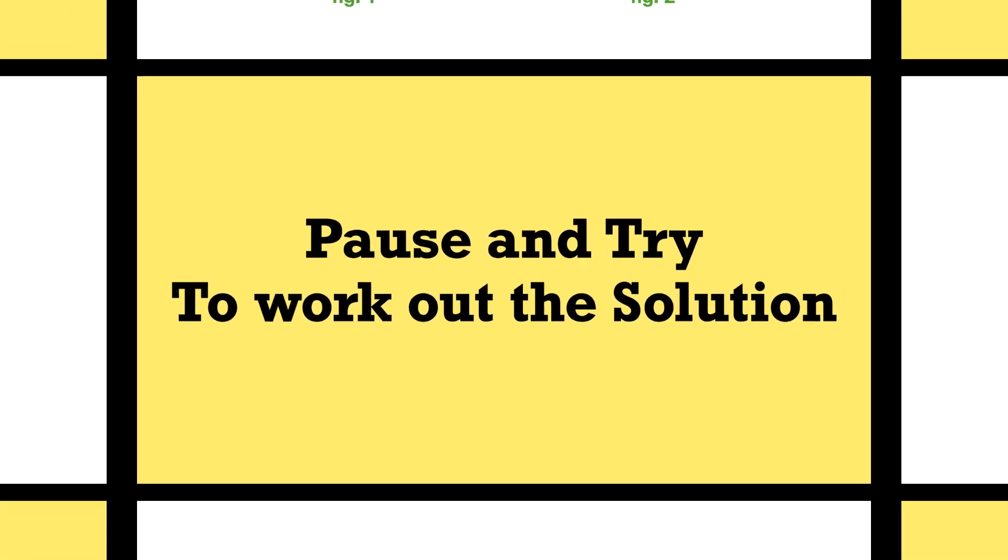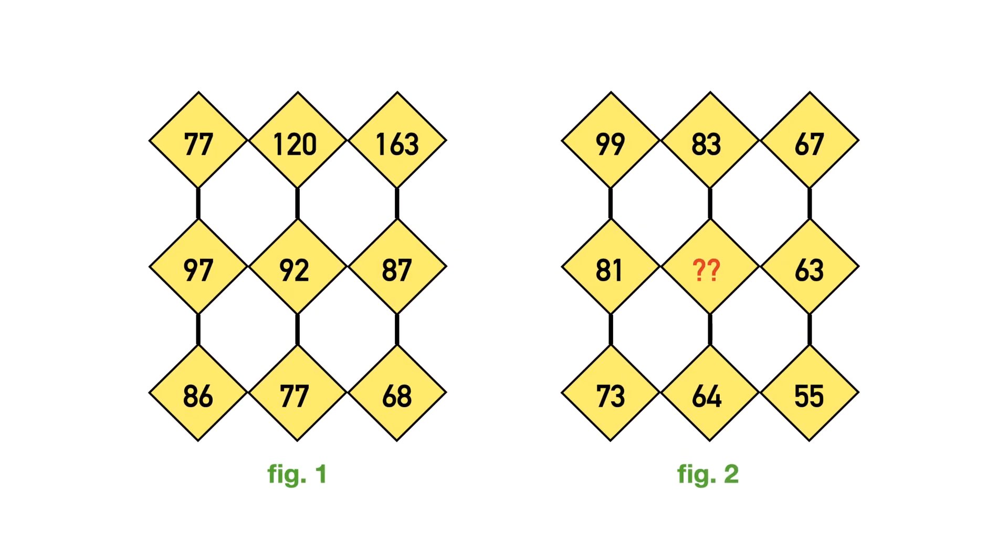Let me explain the solution now. It is important to understand the right approach to attempt these kinds of problems. Here there are series of numbers represented horizontally and vertically. If you observe the numbers carefully, there is no clear conclusion from the numbers represented vertically, but there is a clear pattern observed in the numbers represented horizontally.